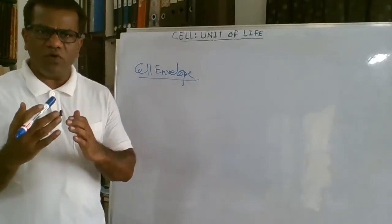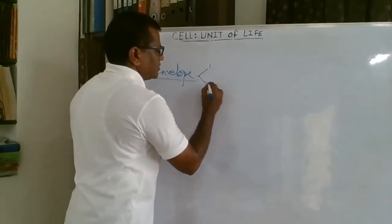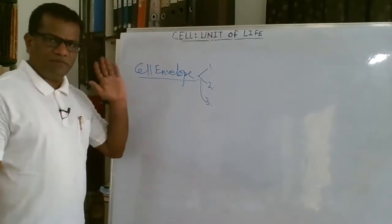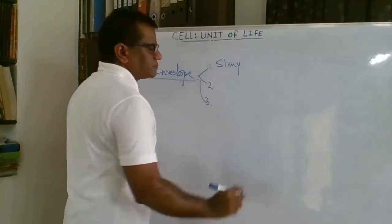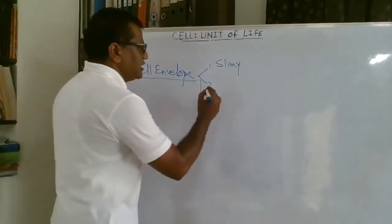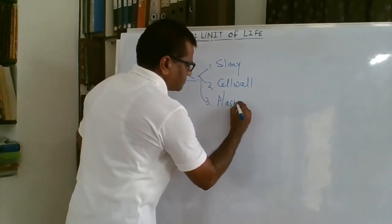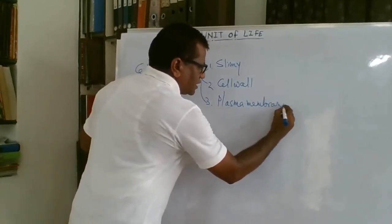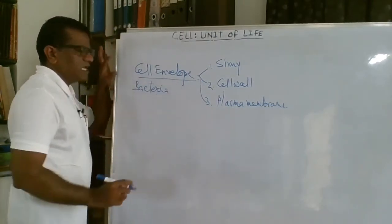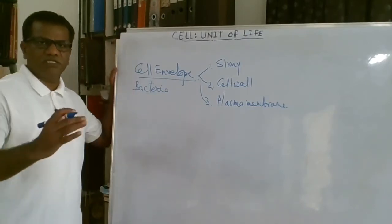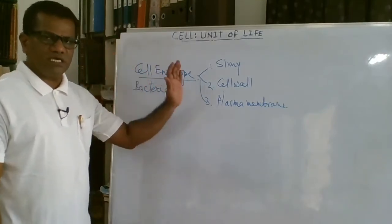There is a slight difference — why do we call it cell envelope? In the case of bacteria, the cell envelope is consisting of three layers. The first layer, which is the outermost, is slimy. The second layer is the actual cell wall. And the third layer is the plasma membrane. We are talking about the bacterial cell envelope here.